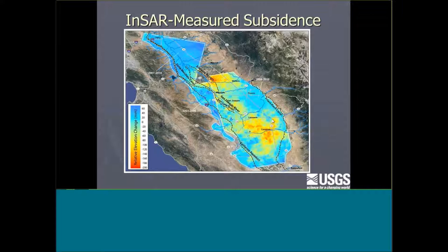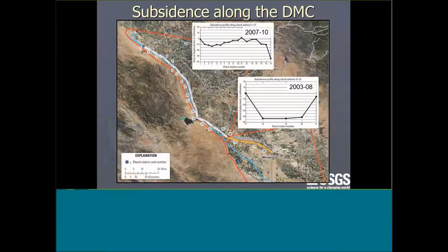This is an InSAR measurement showing warm colors where subsidence is occurring. Historically, the subsidence was on the west side, but now we're seeing it in two new areas. When we started the study, we picked satellite scenes to cover the Delta Mendota Canal and could see we were missing something. I learned something last year that I really didn't understand before: along the Delta Mendota Canal, the canal has check stations — structures that control surface elevation and flow — and we looked at data for each of those check stations.